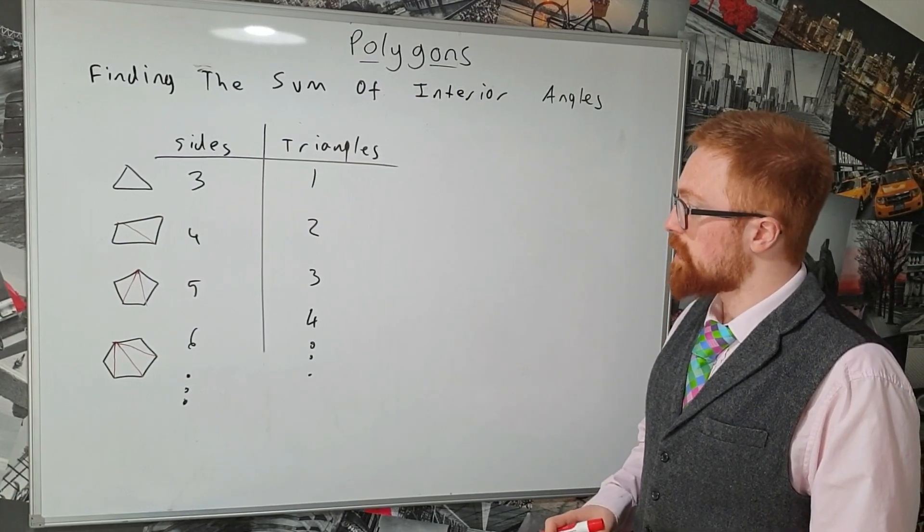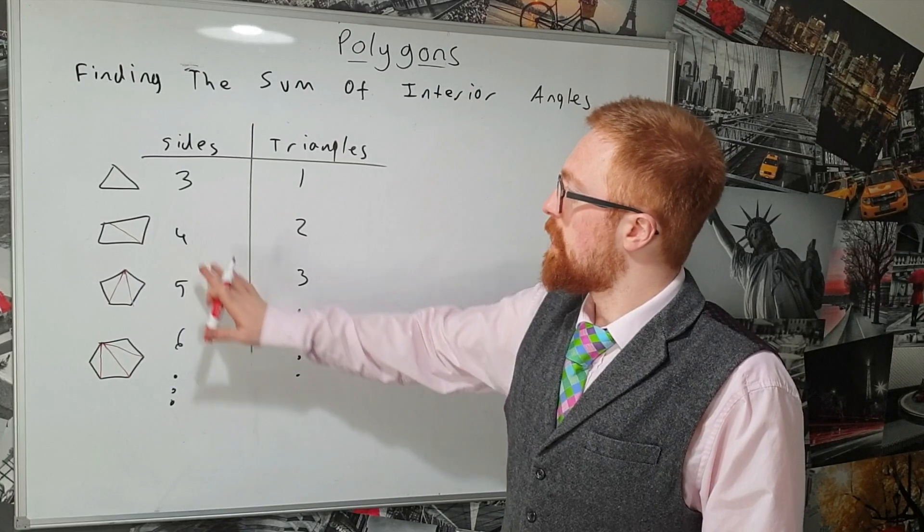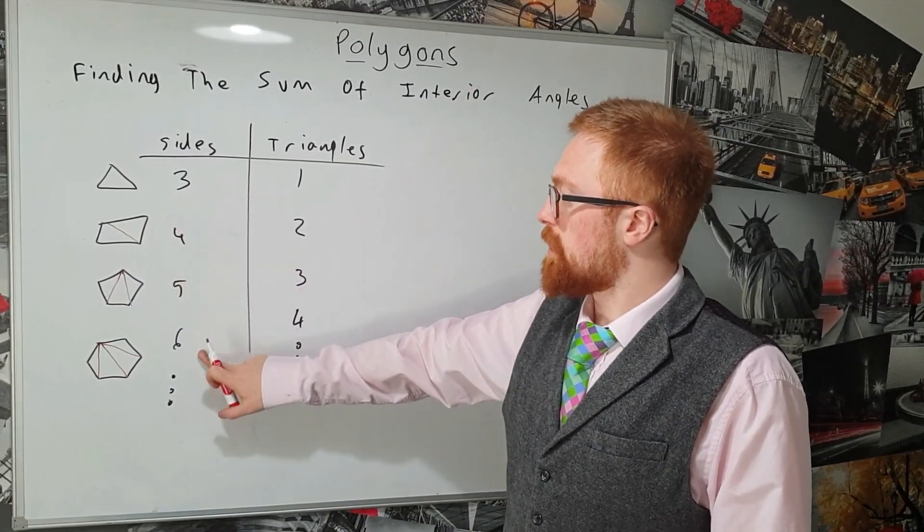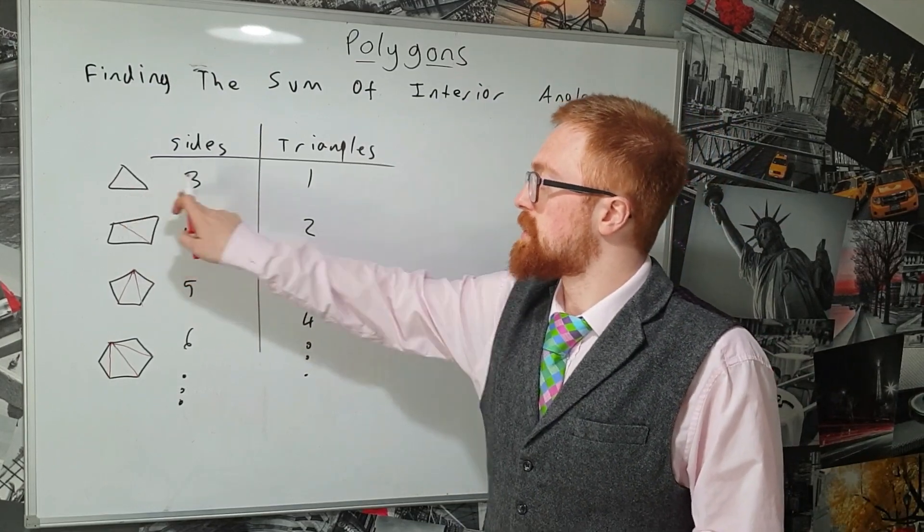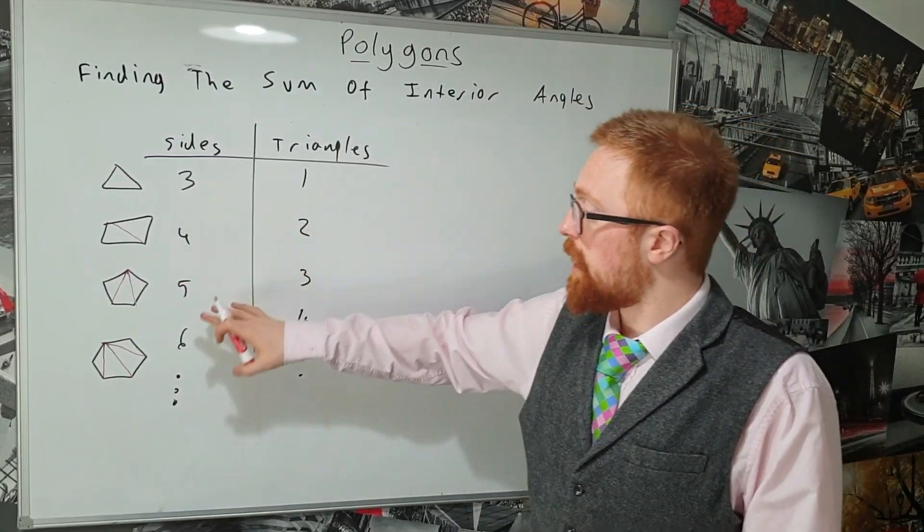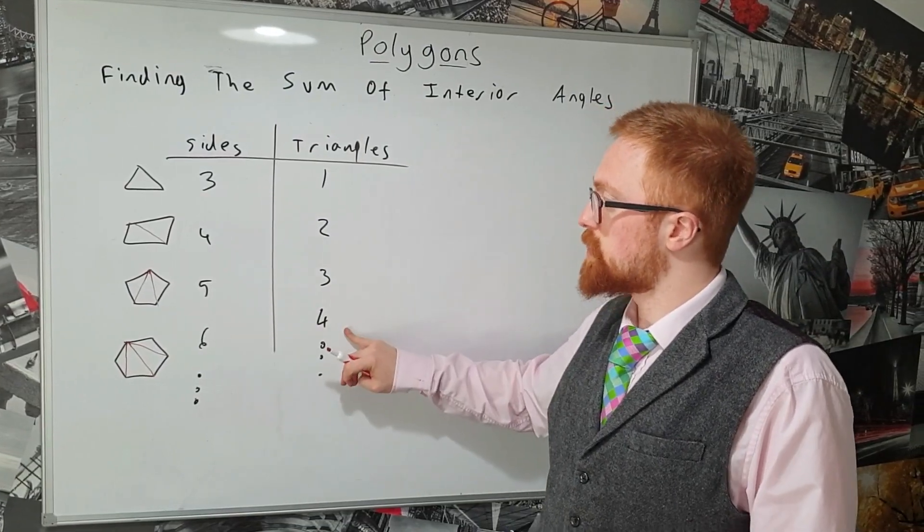Okay so we're going to look at deriving this formula. So what I've done is I've drawn a little table for the number of sides of the polygon and the number of triangles we can split it into. It's quite obvious we can split a three-sided shape into one triangle and we've seen five and six sided shapes go into three and four triangles.